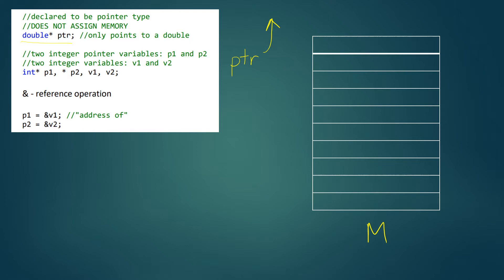We also have two other pointers: P1 and P2. These pointers point to integers. But at this time, they also don't point anywhere. When you declare a pointer, you do not get allocated any memory.